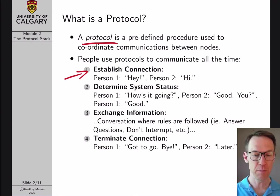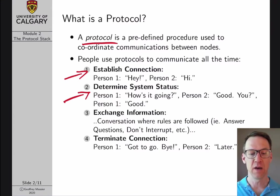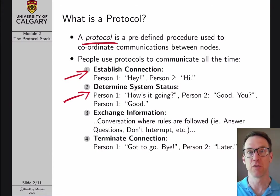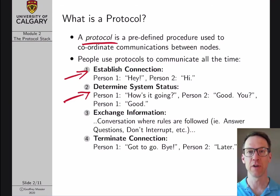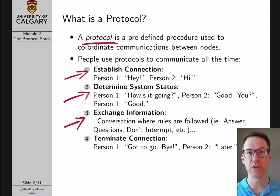The next step in our example protocol is to determine system status — establish whether or not you're able to communicate. Most people just say 'how's it going?' and you reply 'good, you?' and I reply 'good.' If you had said 'it's terrible, I'm running home,' I would have determined you're not ready to talk and we should continue some other time.